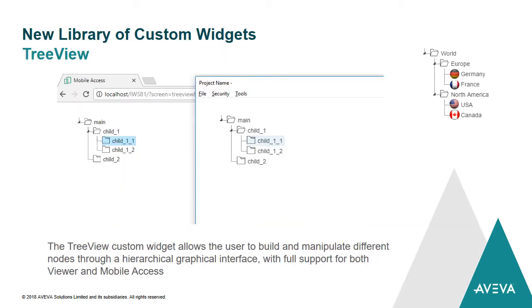We have implemented a new library of custom widgets. I'm showing some of them here. Custom widgets you can put on the screen — it's the evolution of ActiveX and .NET controls. Now you can put a widget on the screen that can be seen on the viewer and on mobile access. We created some of them and are distributing them with the product. Here you'll see a tree view that allows you to build and manipulate different nodes through a hierarchical graphic interface with full support for both viewer and mobile access.